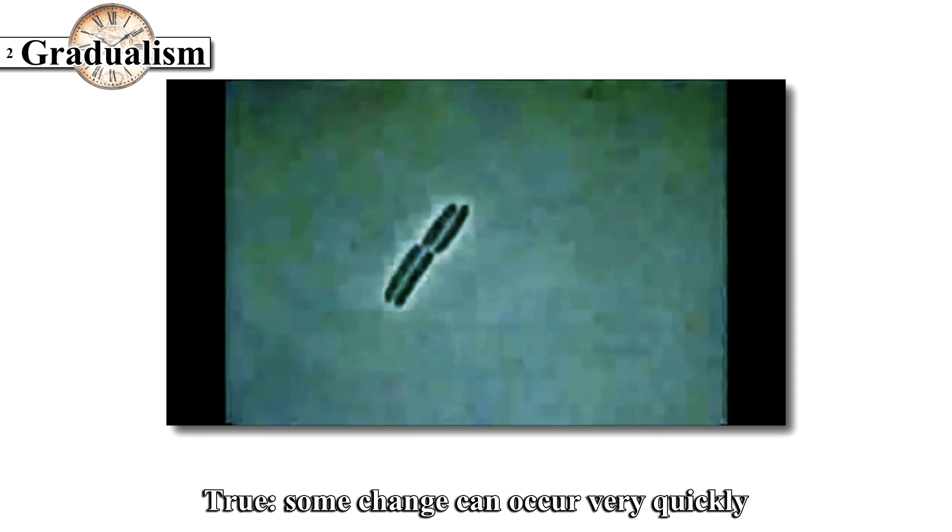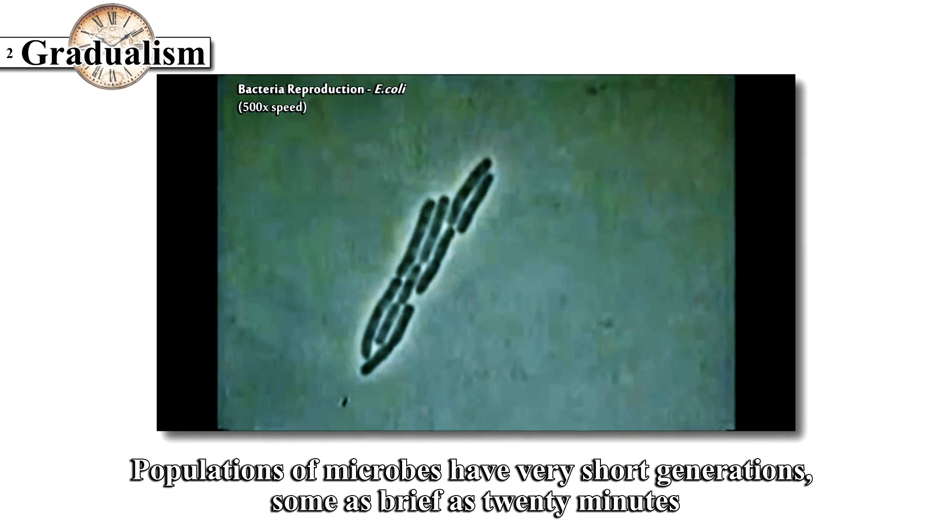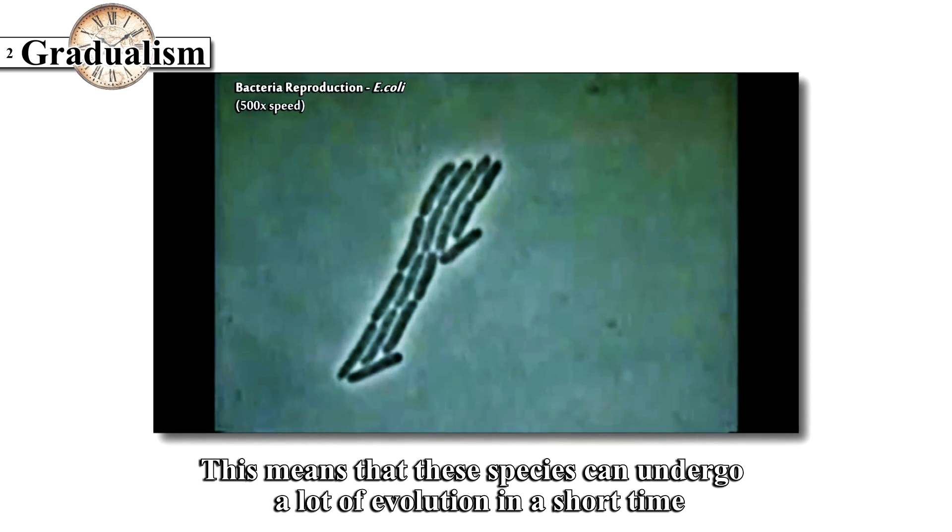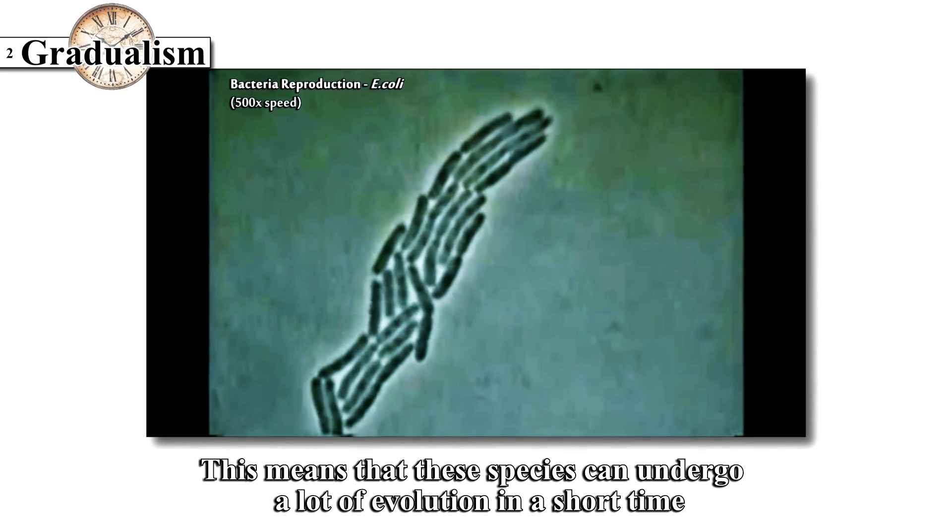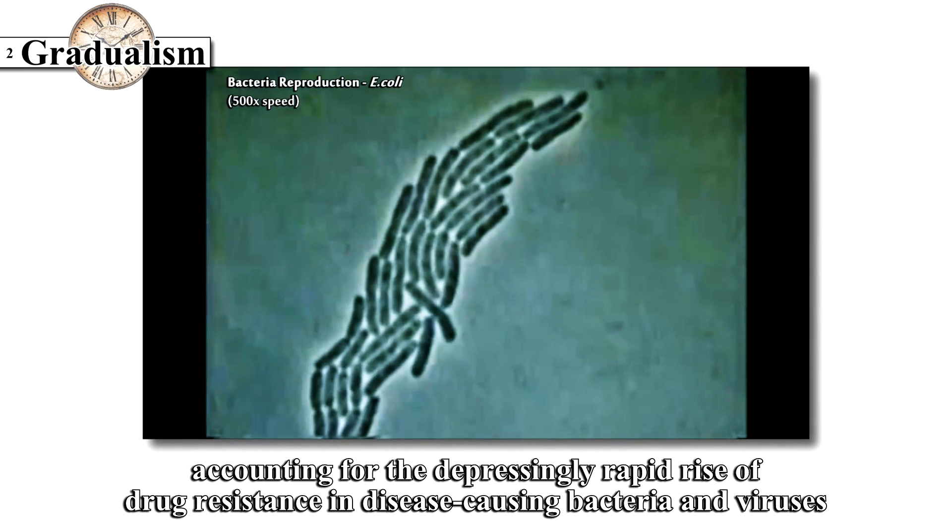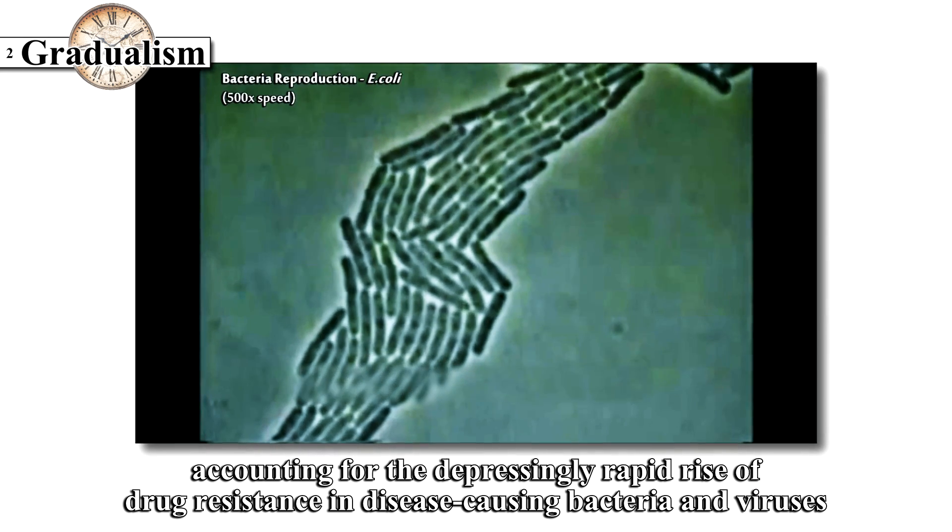True, some change can occur very quickly. Populations of microbes have very short generations, some as brief as 20 minutes. This means that these species could undergo a lot of evolution in a short time, accounting for the depressingly rapid rise of drug resistance in disease-causing bacteria and viruses.